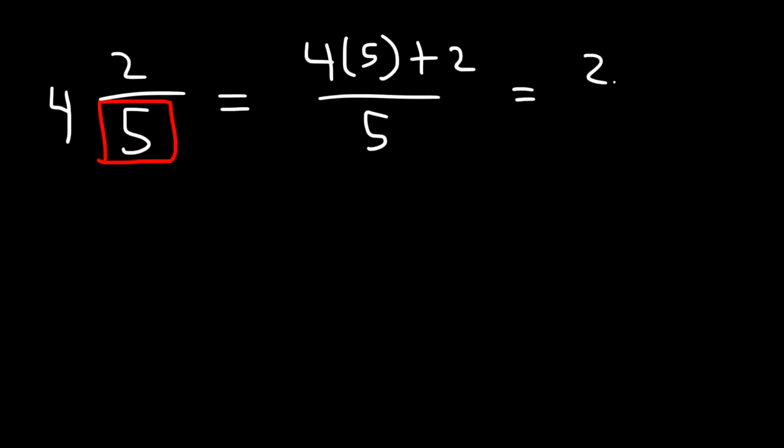4 times 5 is 20, and 20 plus 2 is 22, so our answer is 22 over 5.